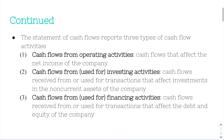The statement of cash flows reports three types of cash flow activities. The first is cash flows from operating activities, which are those that affect the net income of the company — anything that happens in their daily operations which leads to net income.